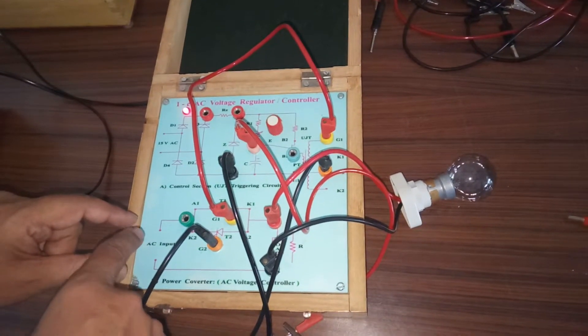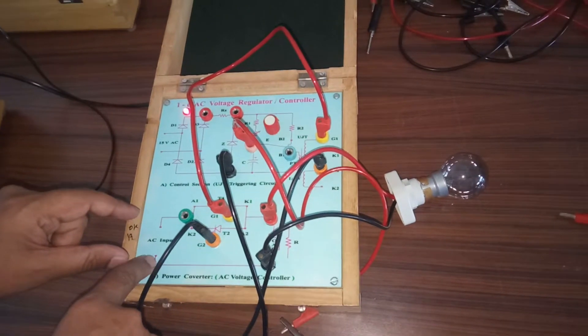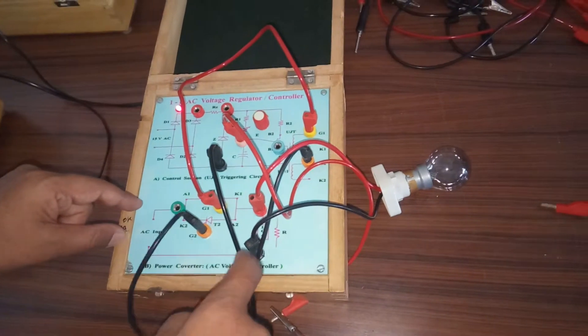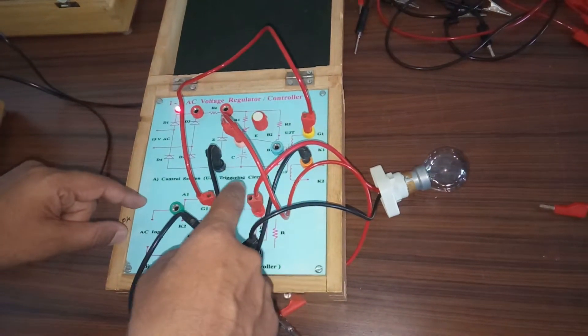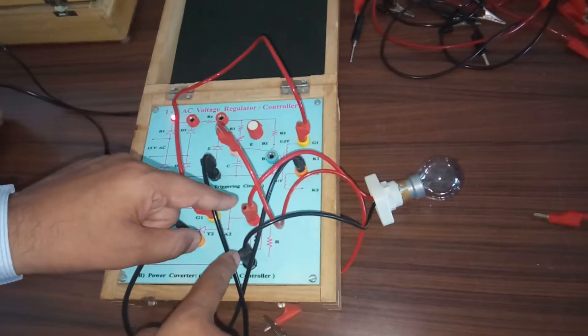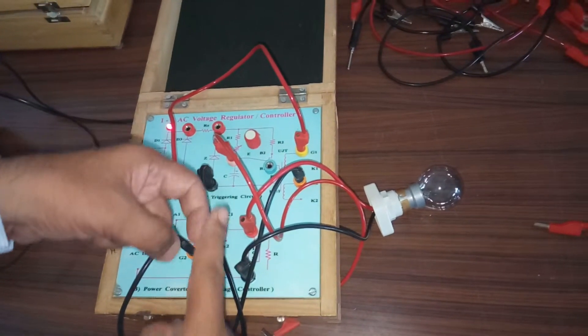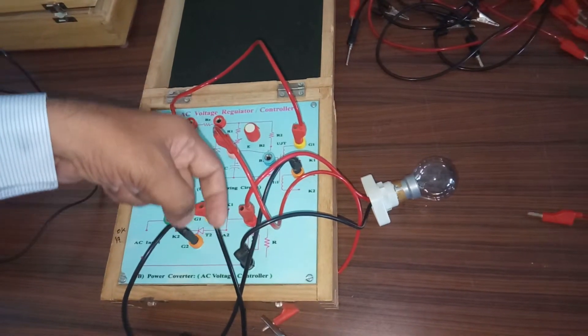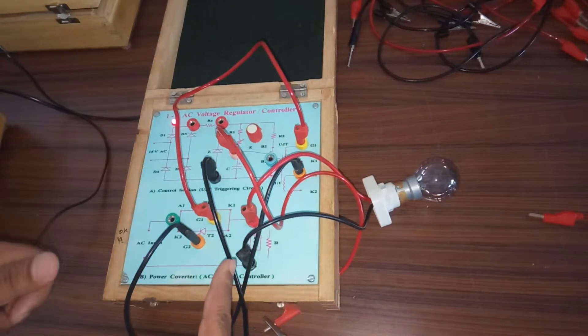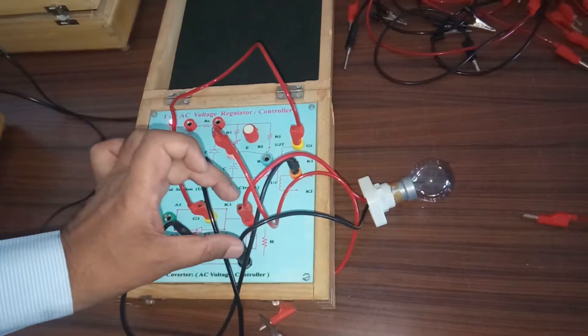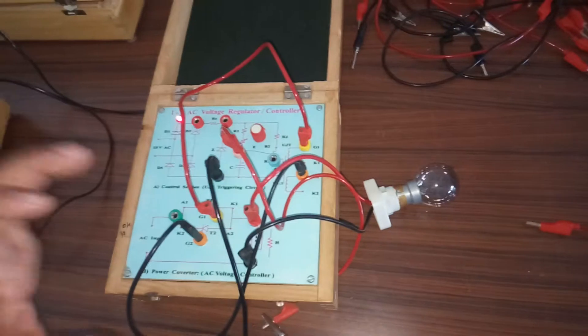And in second case, during negative half cycle, as neutral will be becoming negative with respect to phase, current will flow by this through load in this direction through SCR and back to this. So in load, across load, current is reversing its direction during one cycle, it is coming from top to bottom and in another cycle, it is going from bottom to top. So alternating voltage will be developed across the load.